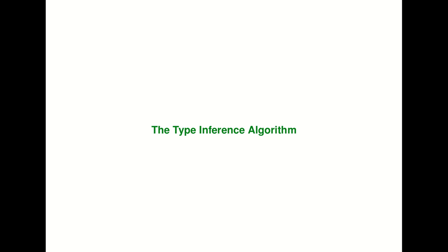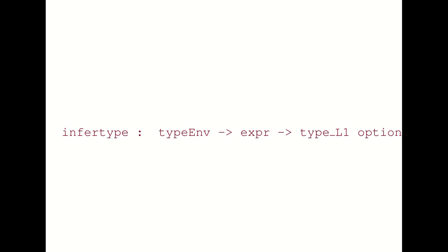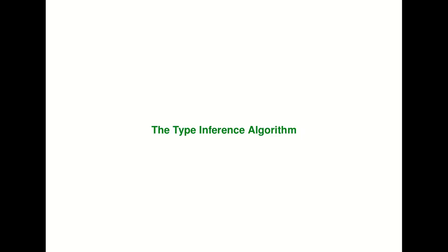Hello and welcome to semantics. In the last lecture we talked about the type system of L1 and we just began to talk about how to implement type inference. We saw that the type inference function takes in a type environment and an expression and tells you whether the program is well typed or not. If it is well typed, it will tell you what the type is. The type inference algorithm relies on the fact that the typing relation has a unique type property, so if there is a type for the program there's only one possible type for it, and that lets us write type inference as a function.